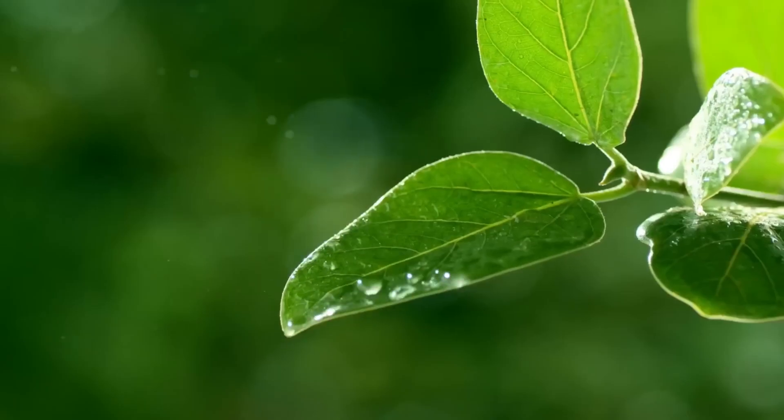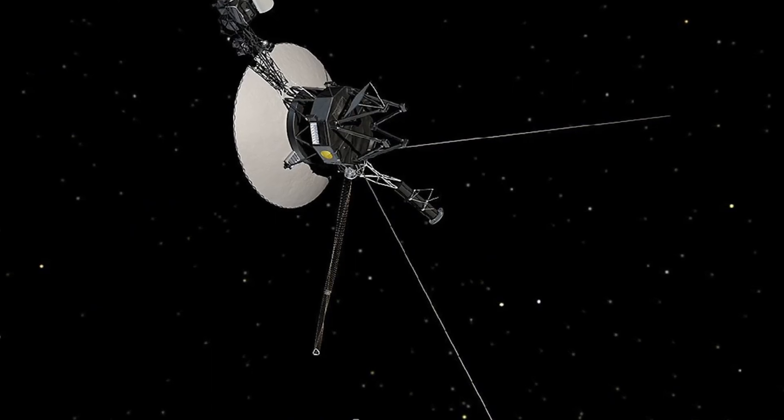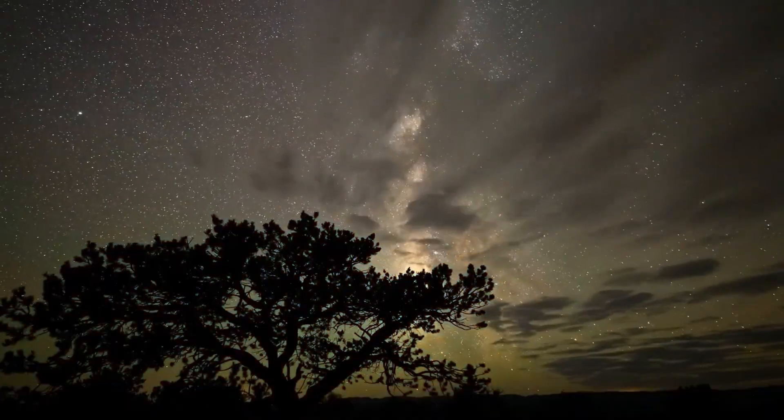The twin spacecraft Voyager 1 and Voyager 2 have operated in space for 45 years instead of the planned 5, and they are still transmitting strange signals to Earth. Scientists believe we won't lose contact with the Voyagers until 2025, but will they have time to show us anything else?